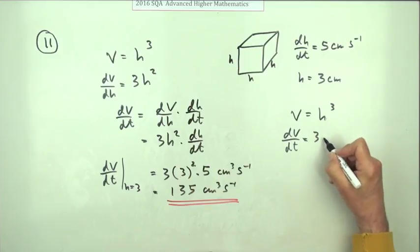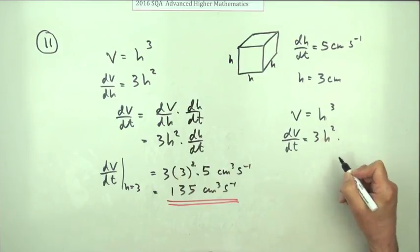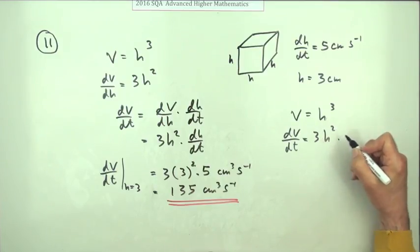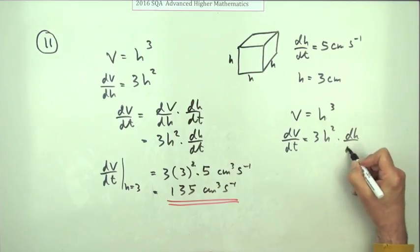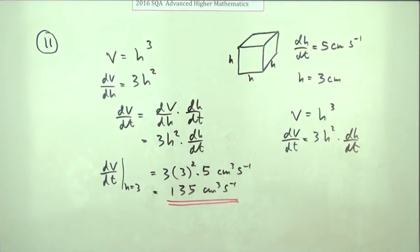dV/dt - since that's a function of a function - is going to be 3 times h squared multiplied by the inner function's rate with respect to time, times dh/dt, which of course takes you to the same result.